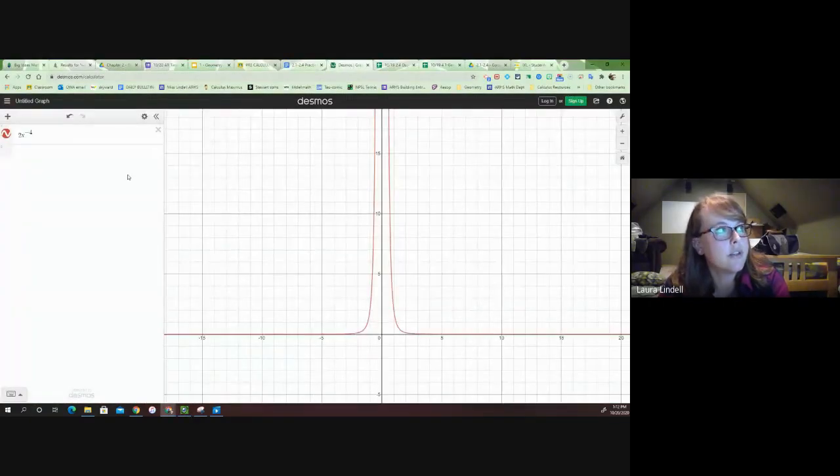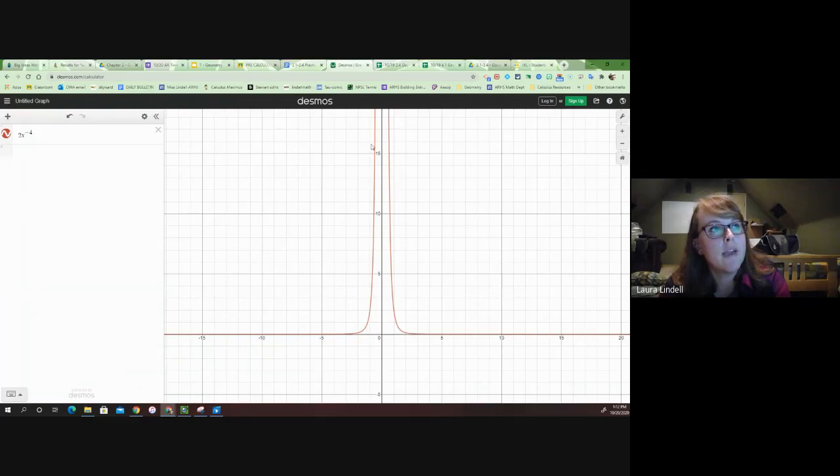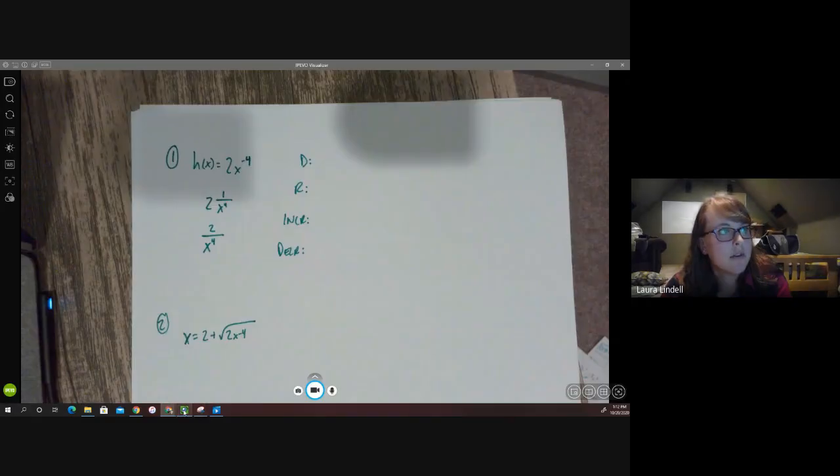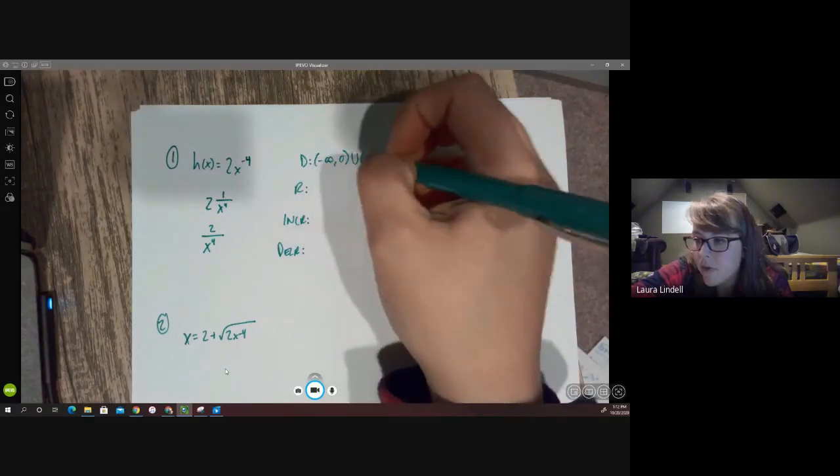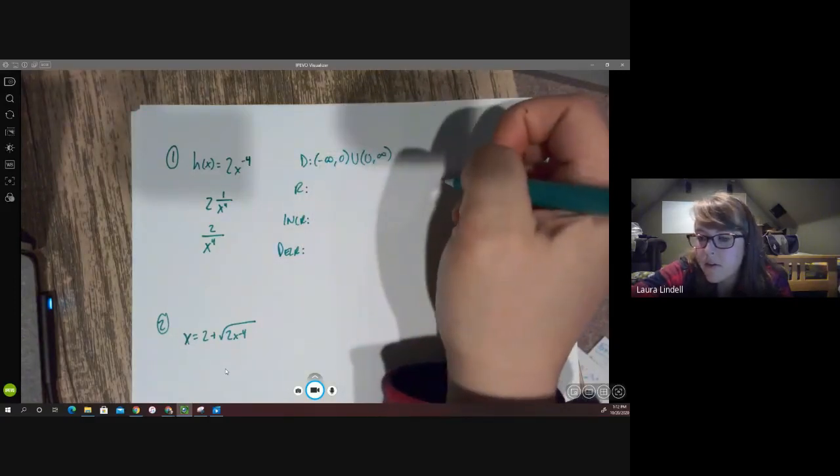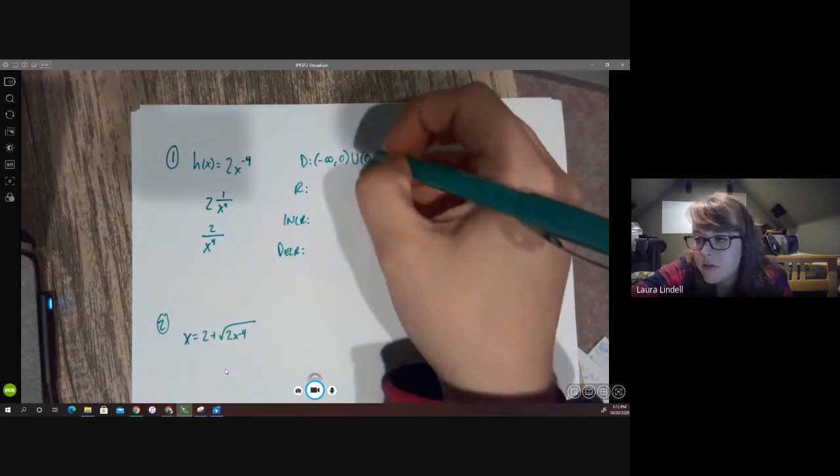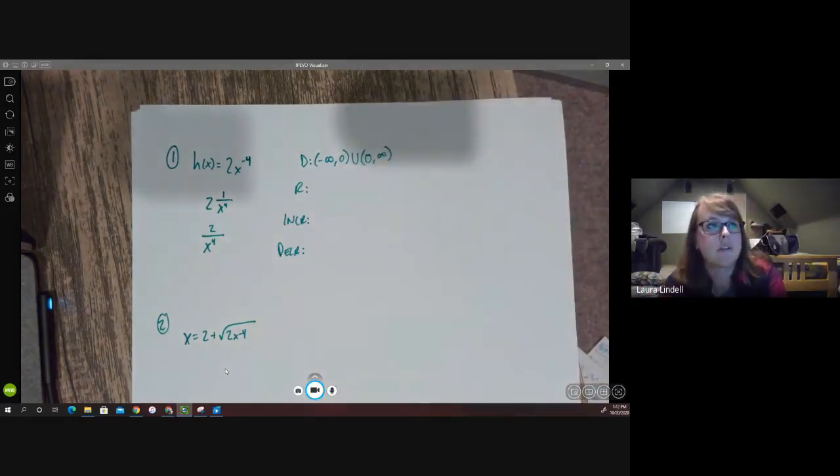So then, taking a look at the graph of this in Desmos, we notice that it looks like this. 2x to the negative fourth, this is what we get. And sure enough, we have an asymptote at zero, where x is zero. But it does continue on forever in the negative direction and forever in the positive x direction. So that does tell us that our domain is only going to be excluding zero. So for my domain, I'm going to have negative infinity to zero unioned with zero to positive infinity. But not including zero, so we don't want the bracket to show that we're including zero or excluding it.